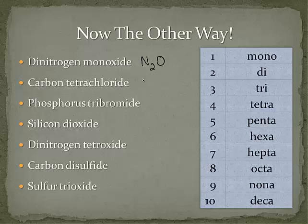Next, carbon tetrachloride. Since there's no prefix on carbon, we know there's only one carbon atom — we dropped mono. Tetrachloride means the symbol Cl with a subscript 4, since tetra means four. So the formula is CCl₄.